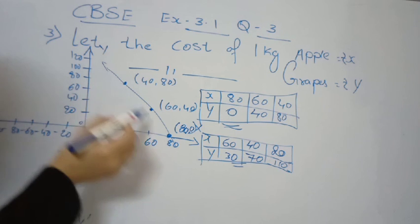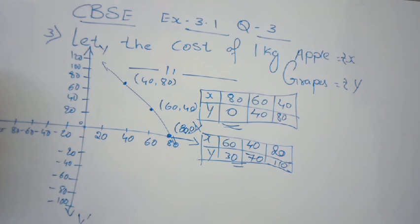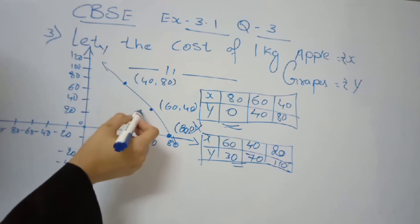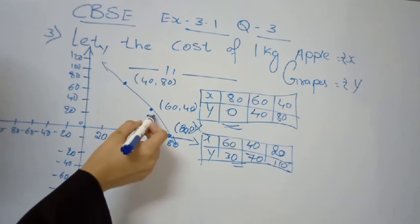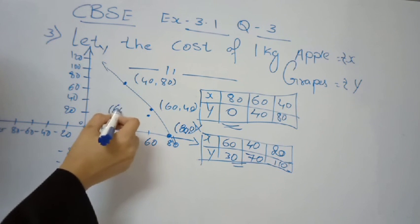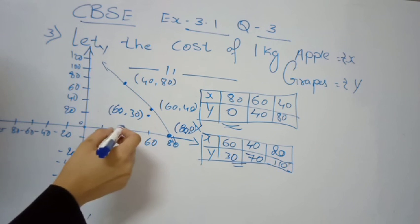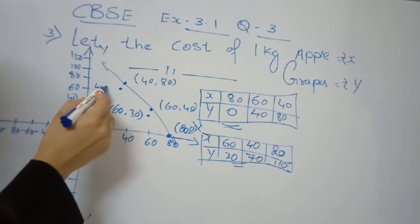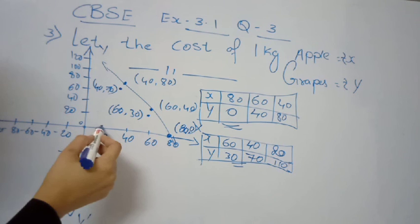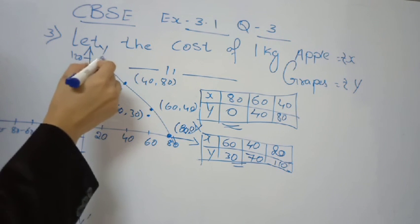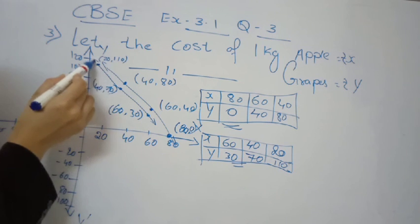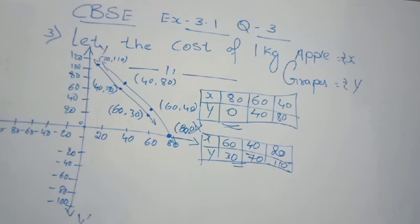For the second condition, plot the points from the table: (60, 30), (40, 70), and (20, 110). Mark all these points and connect them to get the line for the equation 4x plus 2y equals 300. Geometrically, these two lines represent the two situations. The two conditions cut each other at a point, giving the geometric representation. Thanks for watching.